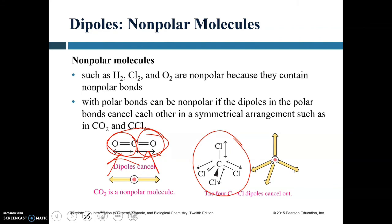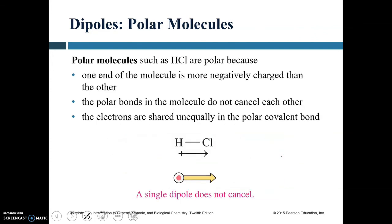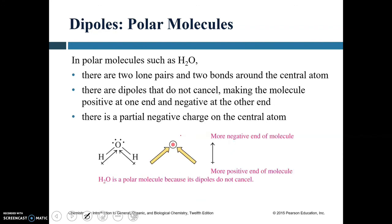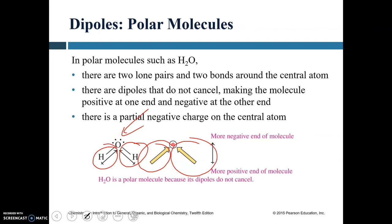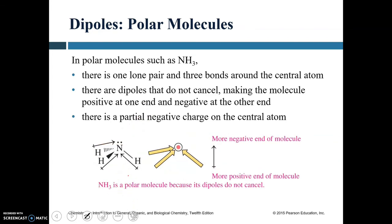Carbon tetrachloride is non-polar because four dipoles oriented tetrahedrally cancel each other. Hydrogen chloride is polar because one end is more negatively charged than the other and the polar bond does not cancel. Water is polar: two O-H dipoles do not cancel due to the bent orientation — the more negative end is oxygen, and the more positive end is the two hydrogens. Ammonia is also polar: three N-H dipoles are oriented so they do not cancel, leaving nitrogen slightly negative and the hydrogens at the positive end.